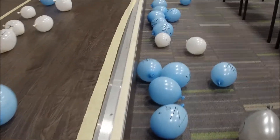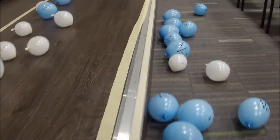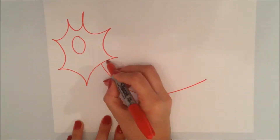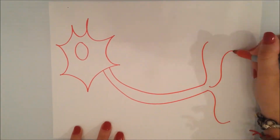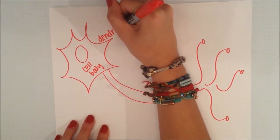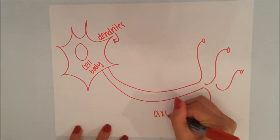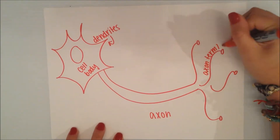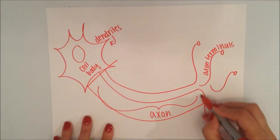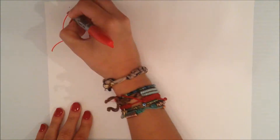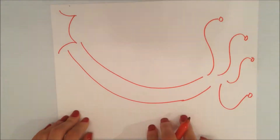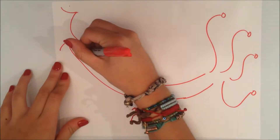In the neuron, under normal conditions, there is an electrical charge across the cell membrane. The inside has a negative charge and the outside has a positive charge. This happens because of ions, which are atoms that carry a positive or negative charge. There are mostly negative ions inside the cell and mostly positive ions outside the cell.